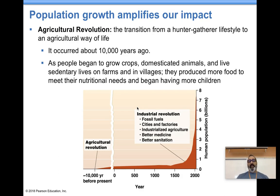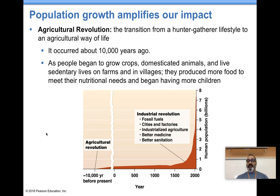A little bit of history. Population growth isn't good for the environment because you need more resources. When the agricultural revolution happened about 10,000 years ago, people finally started growing food. They went from a hunter-gatherer lifestyle to being more sedentary — staying in one area, growing their food. From that, cities and things started to evolve and population started to grow.